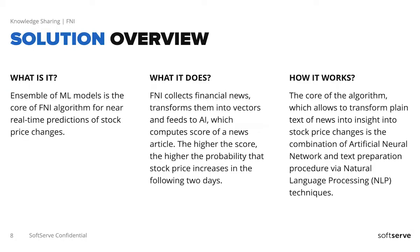Let's proceed with the solution overview. FNI is built around machine learning algorithms — actually several of them — which make two-day-ahead predictions for a selected ticker by reading and analyzing financial news. A ticker is just a symbol for a stock price quoted on a stock exchange — like AAPL for Apple, GOOG for Google, and so on. FNI consists of several modules responsible for handling specific tasks. It automatically collects data in the form of news articles from the New York Times API and prepares pre-processed text to ship to the machine learning model.